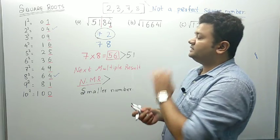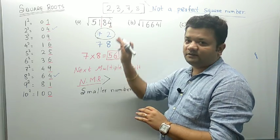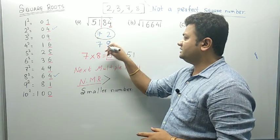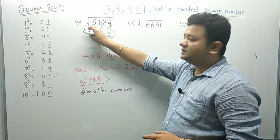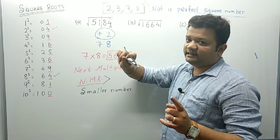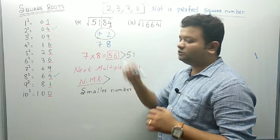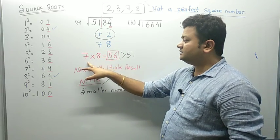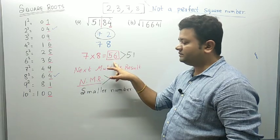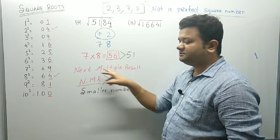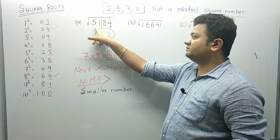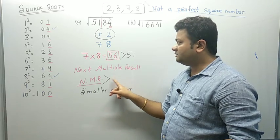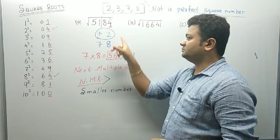The number was 5184. From the right-hand side I selected 84. In 84, the unit space is 4. Unit space 4 comes in the square of 2 and 8 — I wrote 2 and 8. The remaining was 51. A square number just less than 51 is 49, and square root of 49 is 7. I took 7 in both cases. Then 7 is multiplied by the next number, which is 8 — I got 56. This 56 is our NMR. We compare 56 with 51. Since 56 is more, the NMR is greater. When NMR is greater, the answer is the smaller number — that is 72.